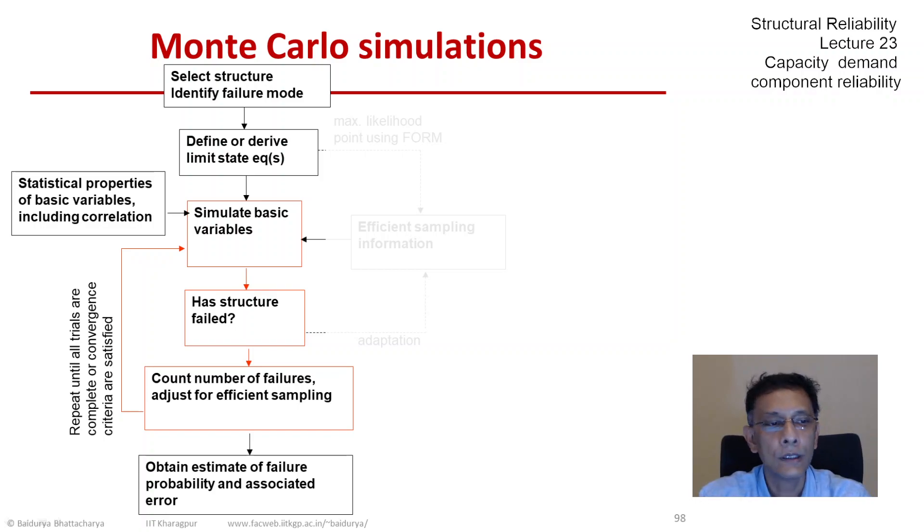And then repeat the loop that you see on the left with the red arrow, and once we are out of the loop we can obtain estimates of failure probability.